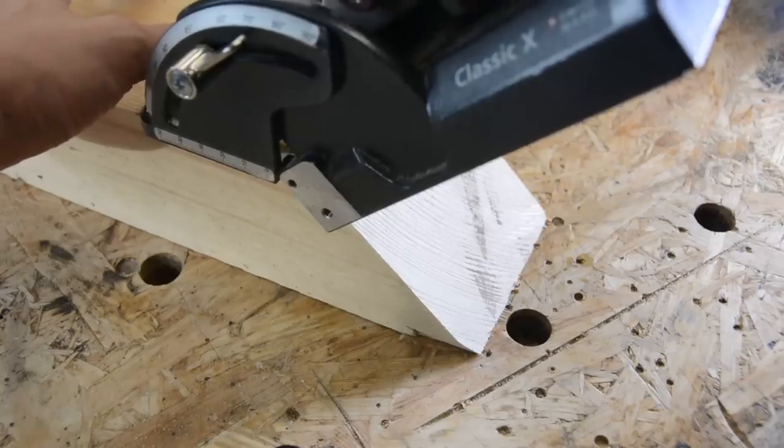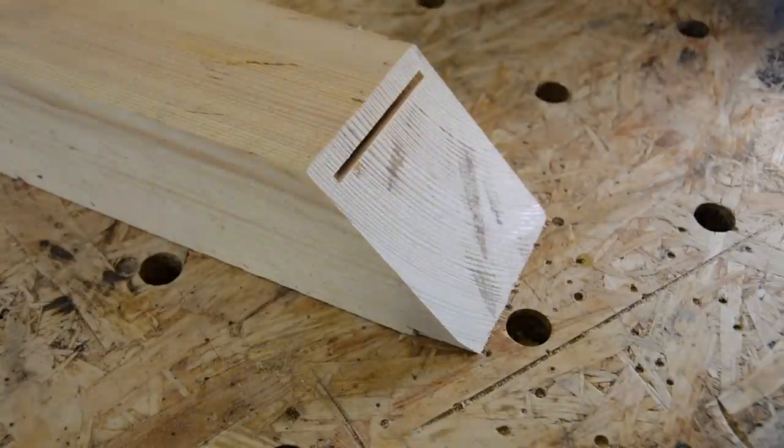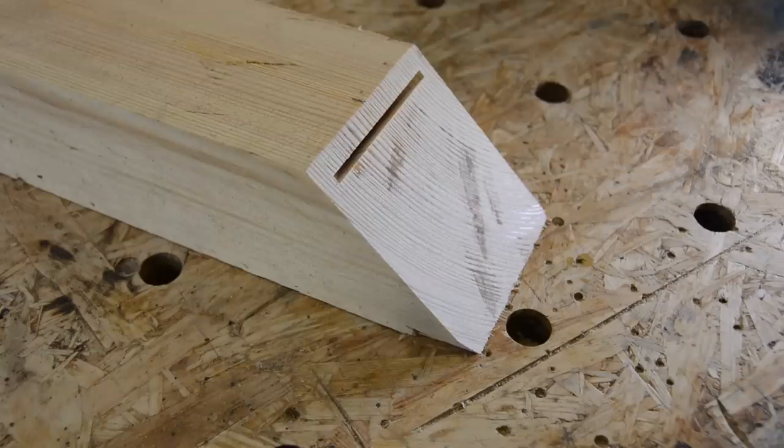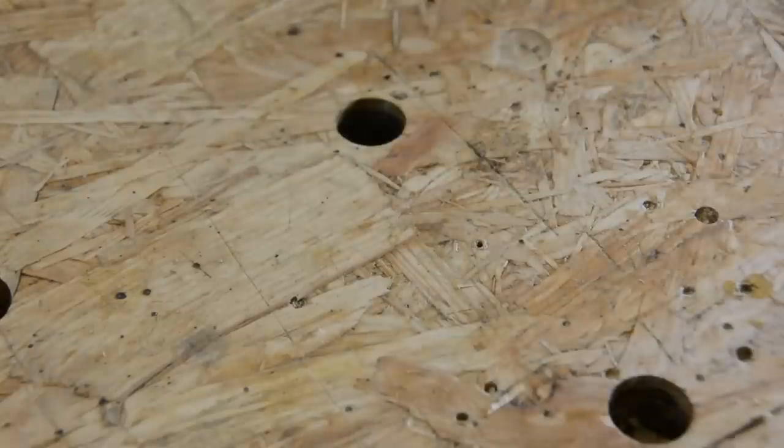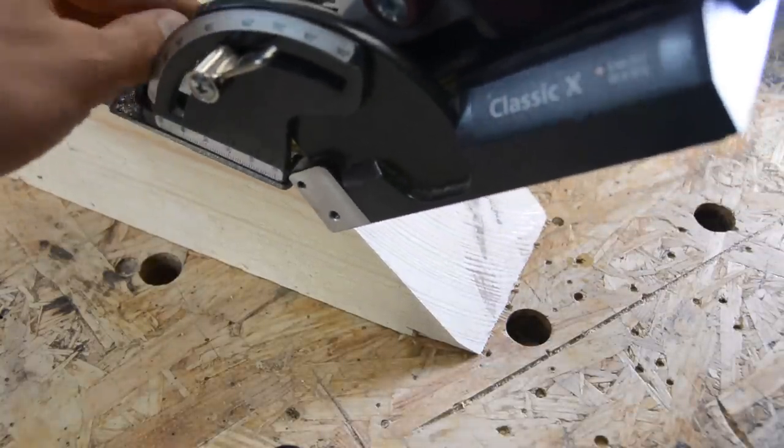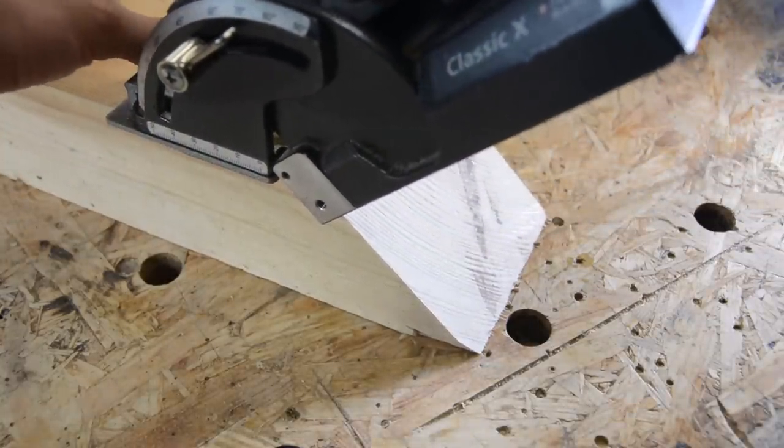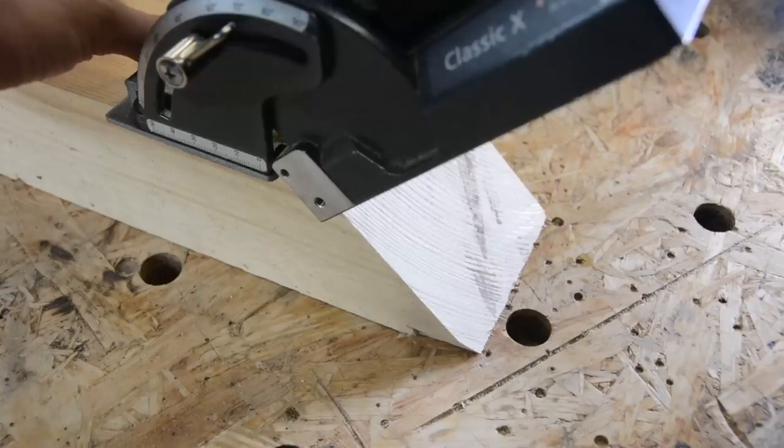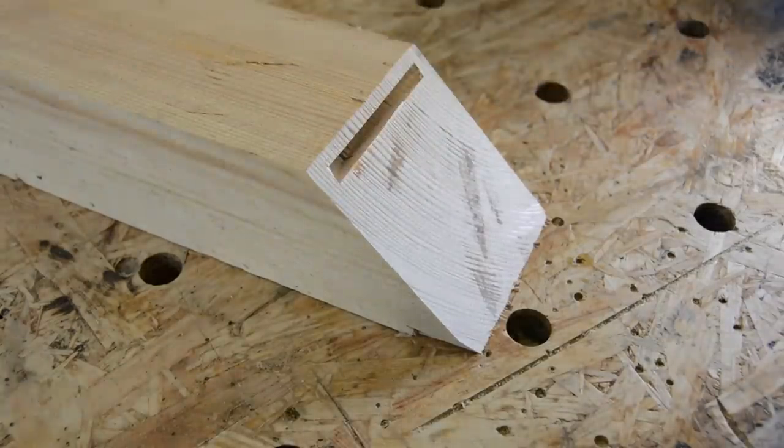For mitered corner joints, you either spend 180 bucks for an 8mm thick blade or 2 bucks for this custom made distance plate that does the same thing as the one that comes with the jointer for mitered corner joints and creates an 8mm slot.